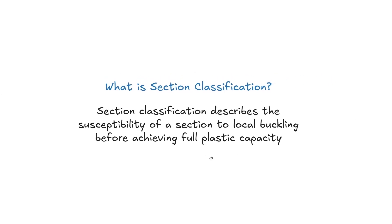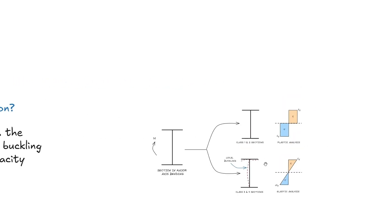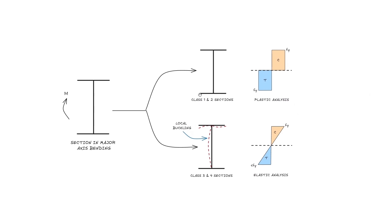So what is section classification? Section classification really describes the susceptibility of a shape to local buckling before it achieves its full plastic capacity under bending or compression. It's best to look at this by examining the stress distribution for a given section under applied bending. A section can fail in one of two ways: a plastic failure, where every fiber of the section achieves its yield stress under bending, or elastically, where we don't achieve the yield stress in every fiber but we do achieve it in the extreme compression fiber at the top of the section.